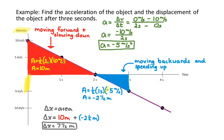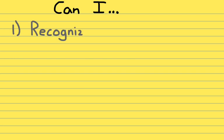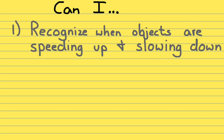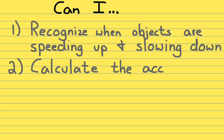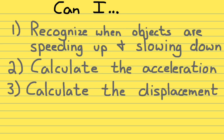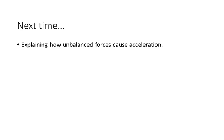So here's what we need to be able to do: recognize from a picture, description, or graph when objects are speeding up and slowing down — when they are actually accelerating. Calculate the acceleration as change in velocity over time, or the slope of a velocity-time graph. And calculate the displacement of an object by finding the area under the graph. Those are the three things needed to describe accelerated motion. Next time we'll work on explaining how accelerated motion is caused by unbalanced forces.